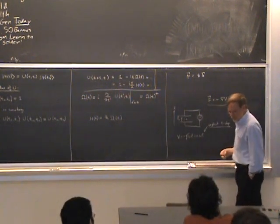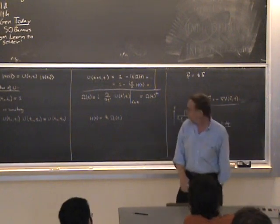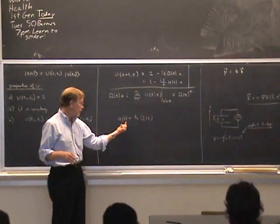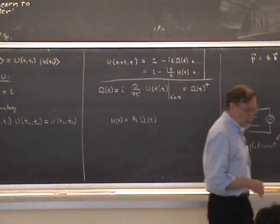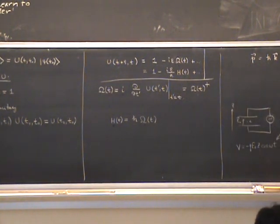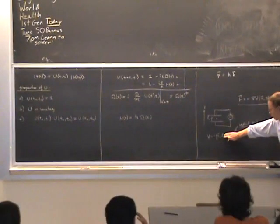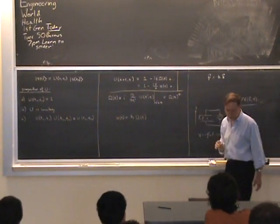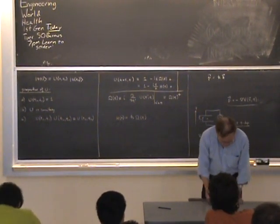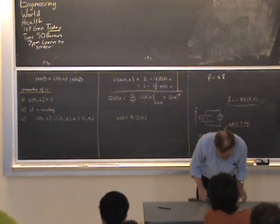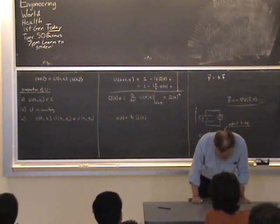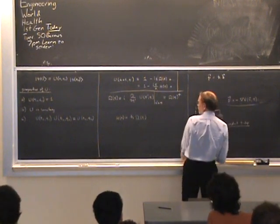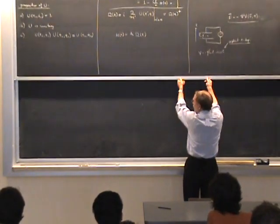Those are two examples of classical mechanics with time-dependent Hamiltonians. We must expect something similar in quantum mechanics, which is why H(t) has time dependence. Nevertheless, the case in which the Hamiltonian is time-independent is very important in practice. There are simplifications that occur in that case, which I'll talk about later. But in general, let's assume H has a time dependence.